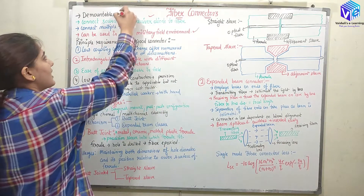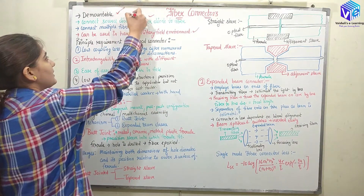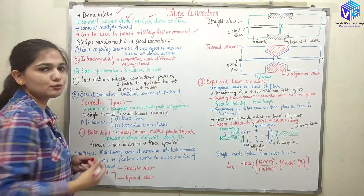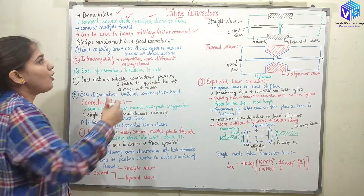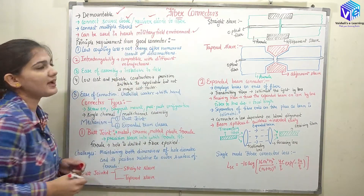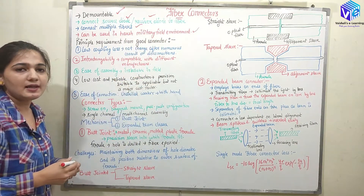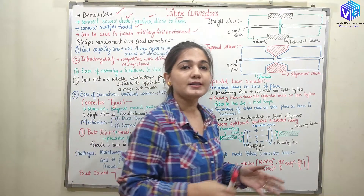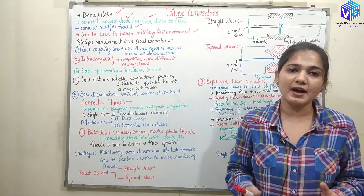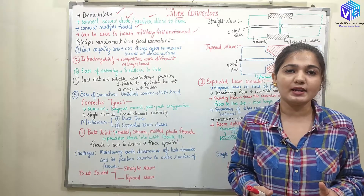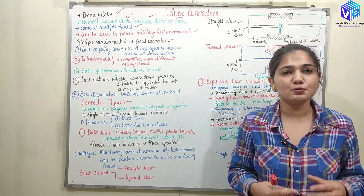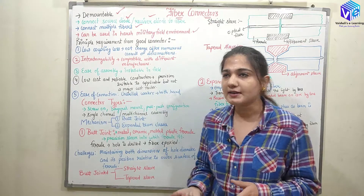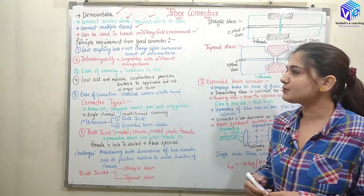Fiber connectors are demountable. They can connect the source diode or receiver diode to the fiber, or they can connect multiple fibers as well. Connectors can also be deployed in harsh military field environments, making their use very wide.